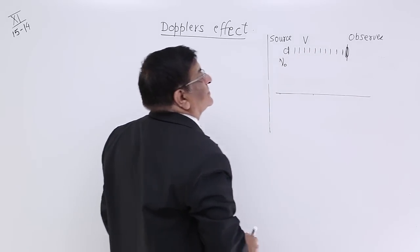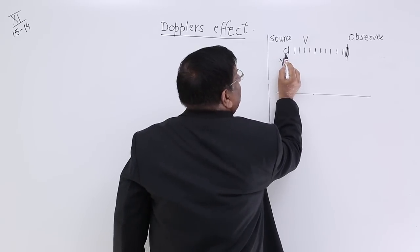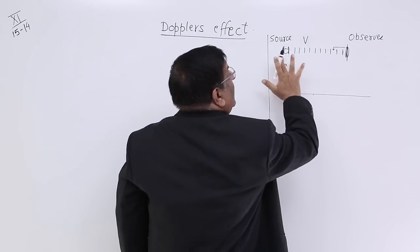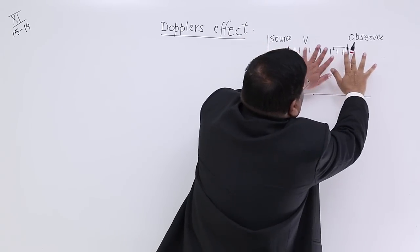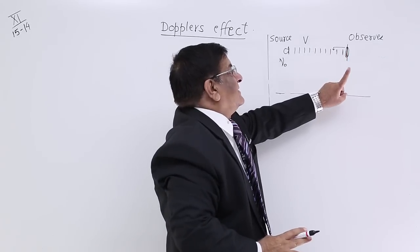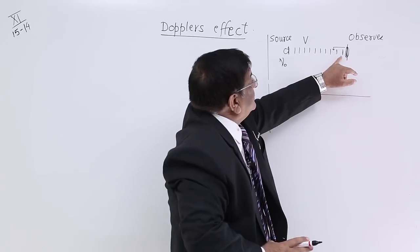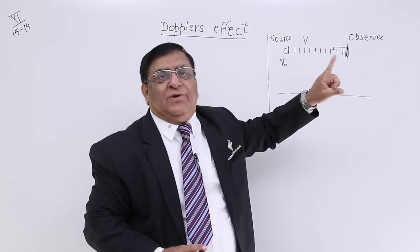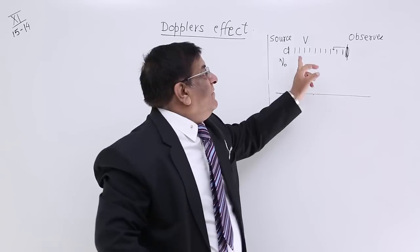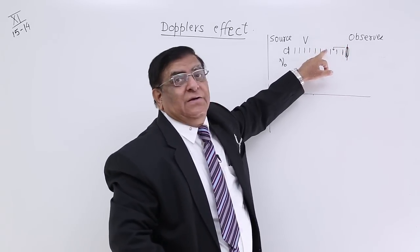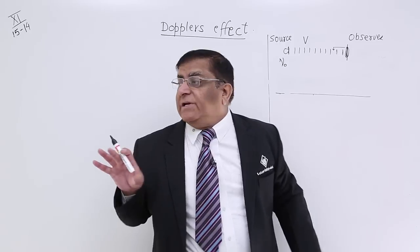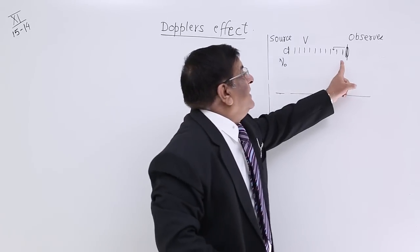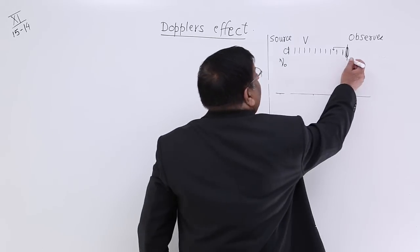Now, suppose he starts moving and he is coming closer to the source. In one second, he changes his position to a closer level. Due to the motion of the waves, the 10 waves are coming to his ears, plus he has covered two extra waves due to his own motion. So now, the number of waves entering his ears are 12, because these two he has covered by virtue of his motion. He has jumped and covered two more waves which otherwise were still away from him.